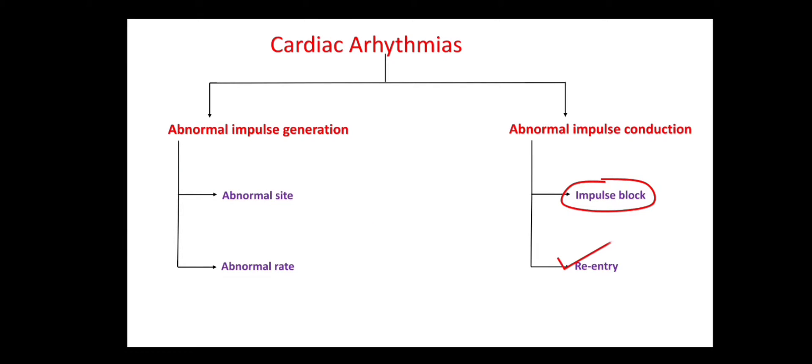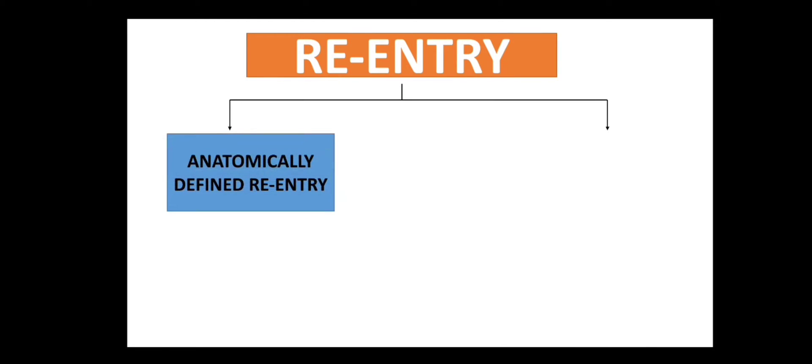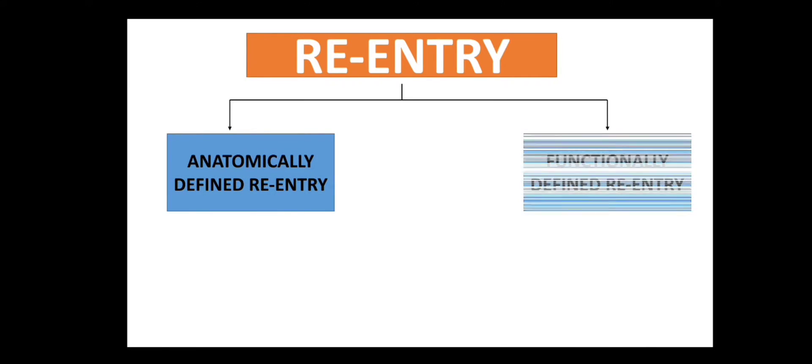Next we'll start with re-entry. The name itself says 're' means again, and 'entry' is for the impulses. Re-entries can be classified into two types: first, anatomically defined re-entry, and second, functionally defined re-entry.